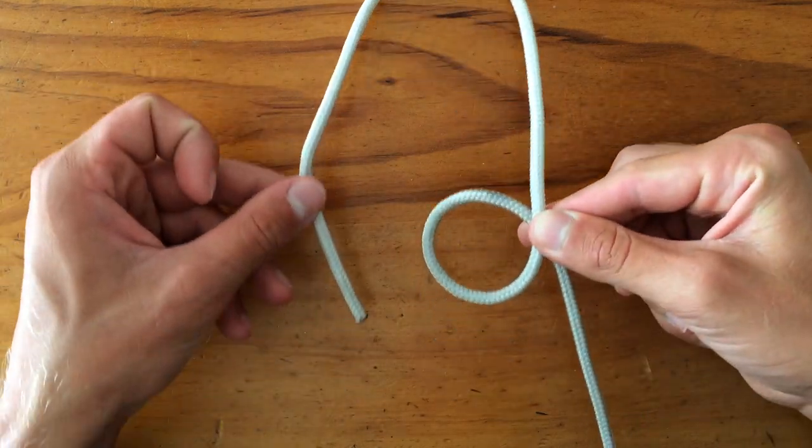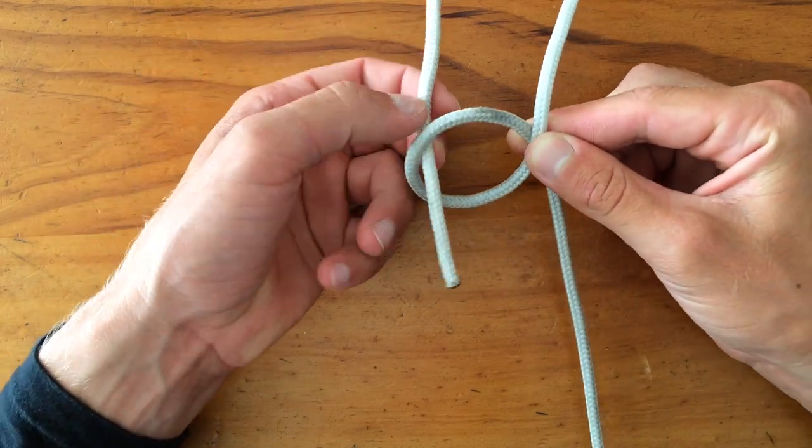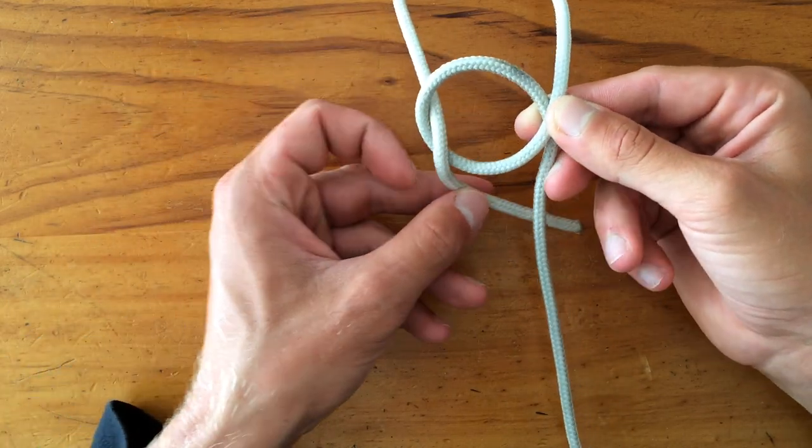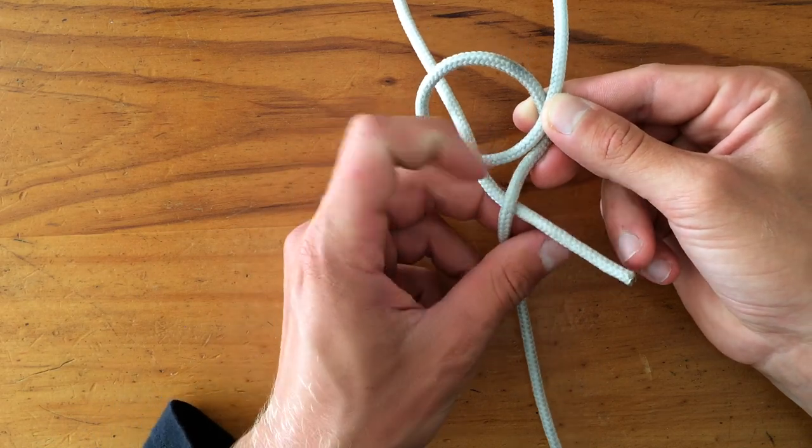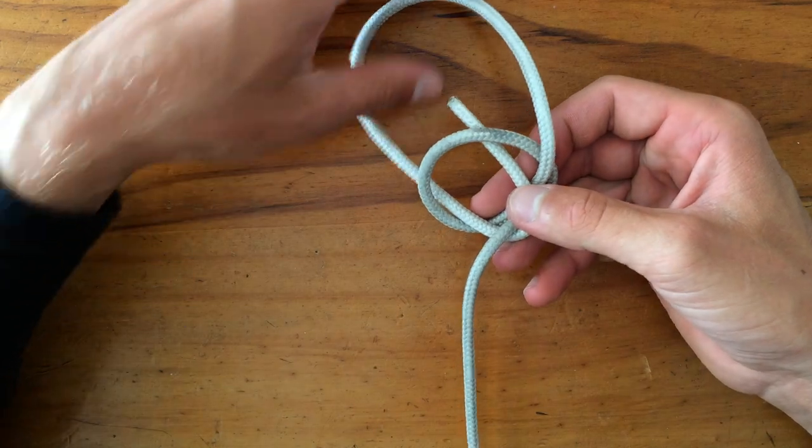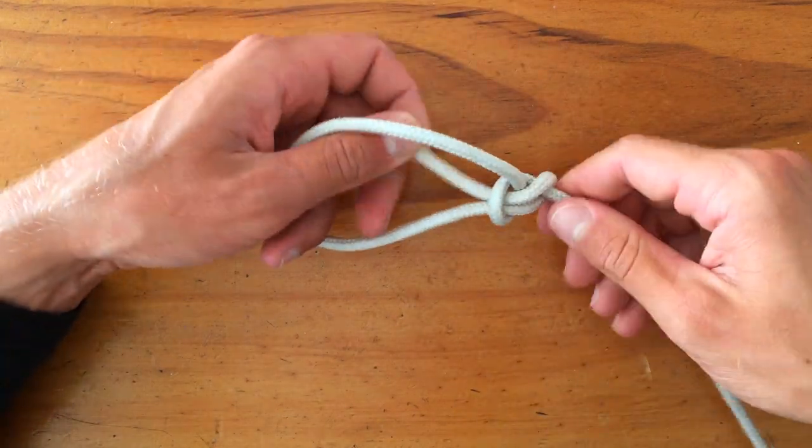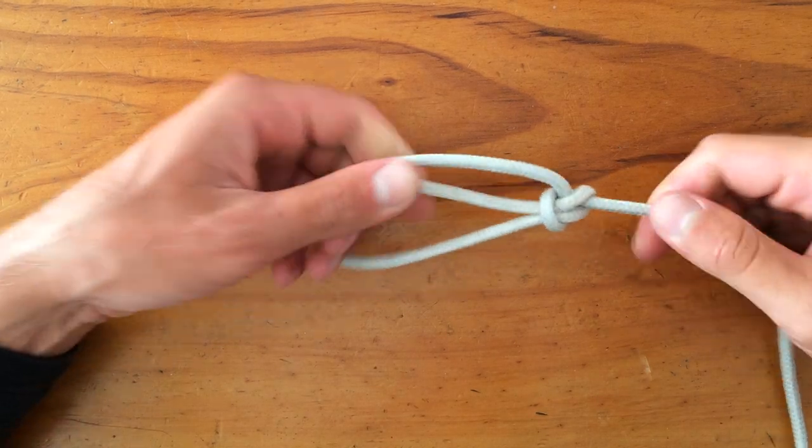Once you've got that there, you pinch that edge, then you put the tag in through the hole. Then it comes around the main line and goes back through the hole in the middle. That's it. Then you cinch it down, and there's your bowline right there.